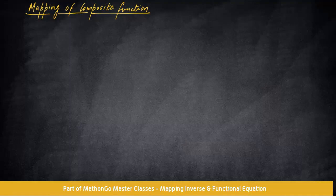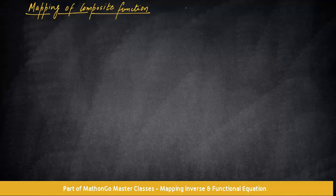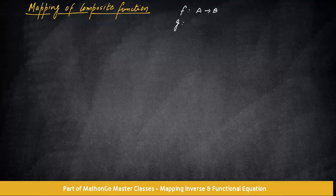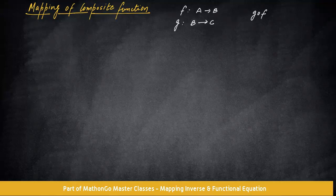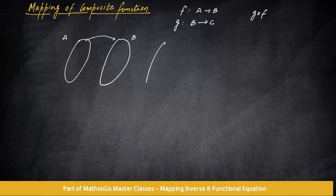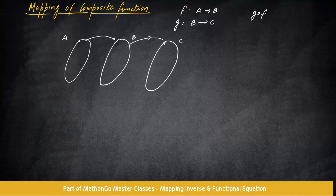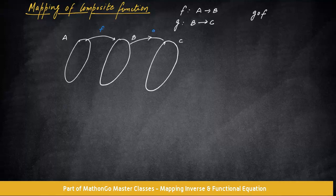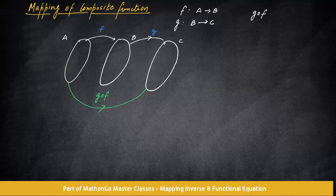Okay, now let us understand a very important topic that is mapping of composite functions. So what do you mean by this? Let's say there is a function from A to B, which is F, there is a function G which is going from B to C, then what you can say about G of F, which is the composite function. So something like this is happening. This is A, there is a relation from A to B set. There is a C set. So this mapping is your, the first mapping is your F, the second mapping is G, and this whole mapping from here to here would be known as G of F mapping.